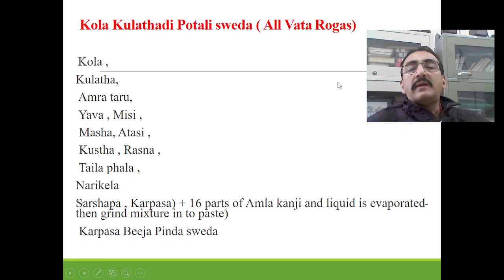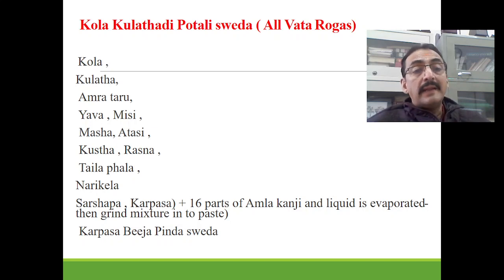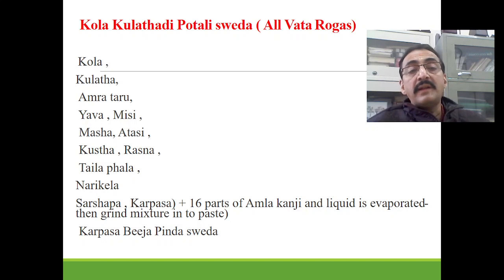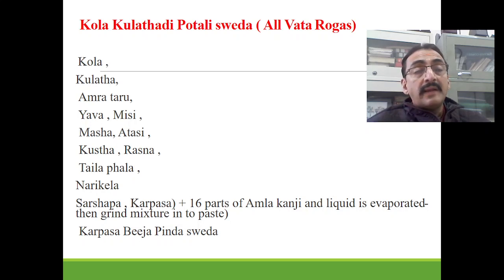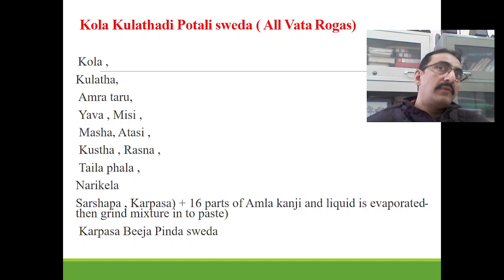One type of potali sveda useful in all vata jirogas is kola kulatthadi potali sveda. It contains drugs like kola, kulatta, amrataru, yava, mishi, masha, atasi, kusta, rasna, thailaphala, narikela, sarsapa, and karpasa — 16 parts. To this mixture, 16 parts of amla kanji is added, the liquid is evaporated, and the remaining portion is ground into a paste, which is then applied. Karpasa bija pinda sveda is also available and can be practiced.